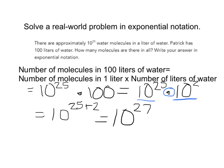So that means that there are 10 to the 27th molecules in 100 liters of water.